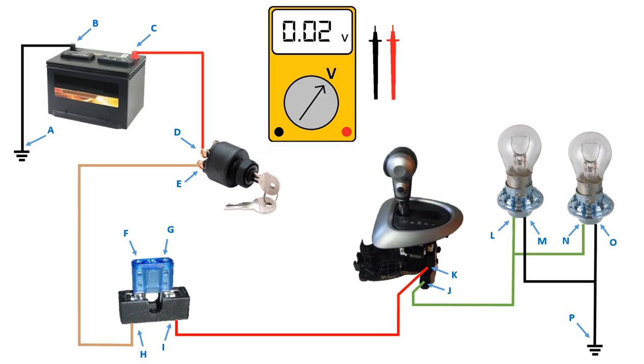In this video we're going to do a case study of a backup lamp circuit that isn't working. We're going to use a voltmeter to measure voltage drop in the circuit to try to find the cause of the problem.